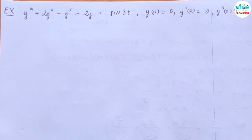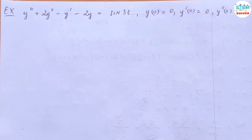Using the Laplace Transform to solve the initial value problem: y triple prime plus 2y double prime minus y prime minus 2y equals sin(3t), with initial conditions y(0) equals 0, y prime(0) equals 0, and y double prime(0) equals 1.